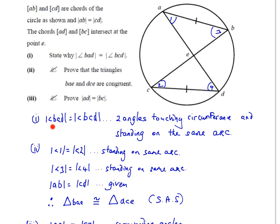We write: angle BAD equals angle BCD because the two angles are touching the circumference and standing on the same arc. You can shorten this to 'angles on the same arc' — that would be fine as an answer.